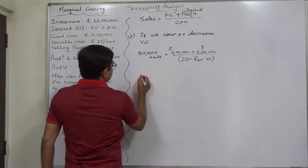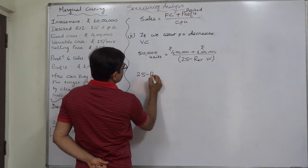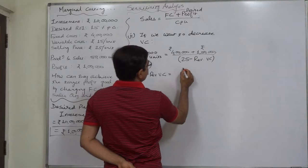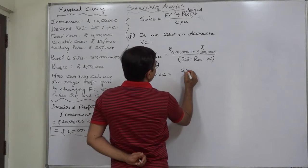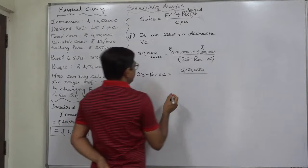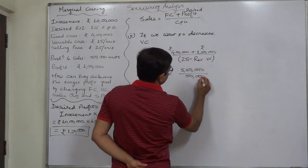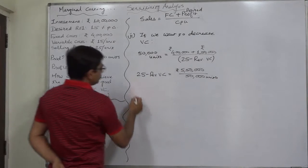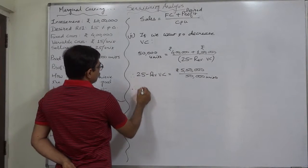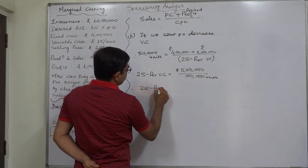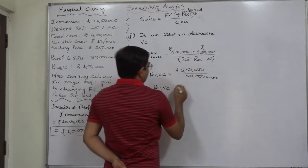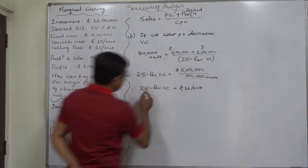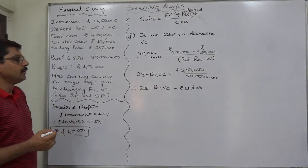Now let us change the subject. It should be 25 minus revised variable cost equals to the summation of these two: ₹5,50,000 divided by 50,000. This 50,000 are units, this ₹5,50,000 are rupees. So it comes to 25 minus revised variable cost equals to ₹11 per unit.